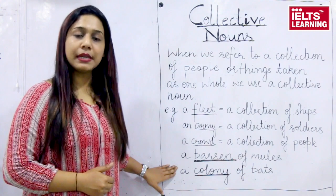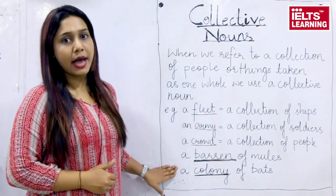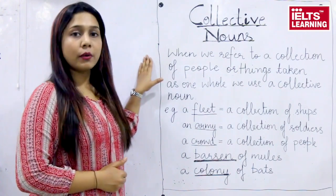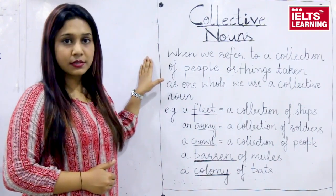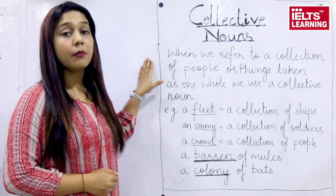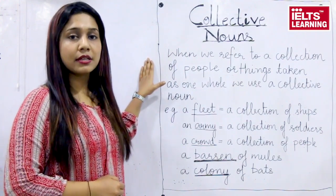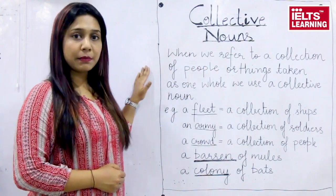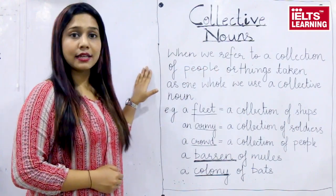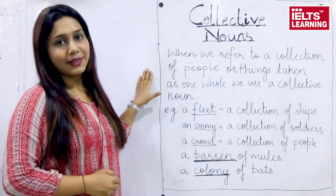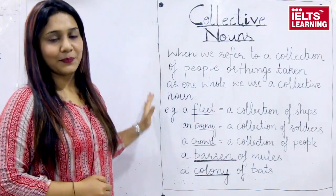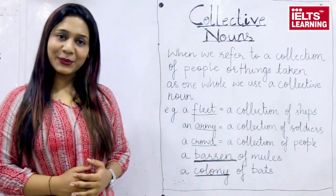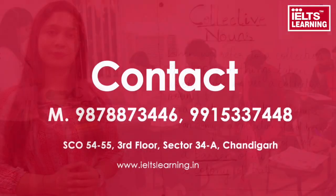Rather than saying that you saw many bats, you can simply say 'a colony of bats was observed.' You should go ahead and memorize as many collective nouns as you can, but the key concept is that they refer to a collection of people or things taken as one whole. We will be coming up with more such videos. Thank you for watching.